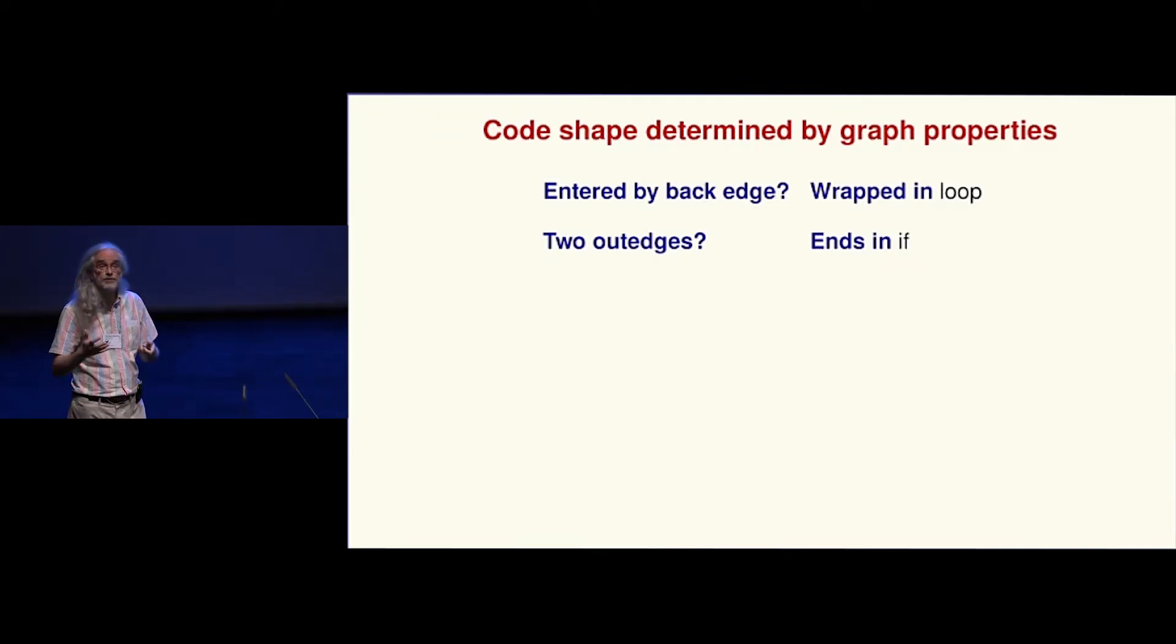If the node is entered by a back edge from higher numbered to lower numbered, like the loop header I showed, then the translation is going to be wrapped in a loop. That's literally all you do—you say if there's a thing, wrap this in the loop. If the node has two out edges, then its translation needs to end in if. There's something more complicated for computed gotos that I won't trouble you with.